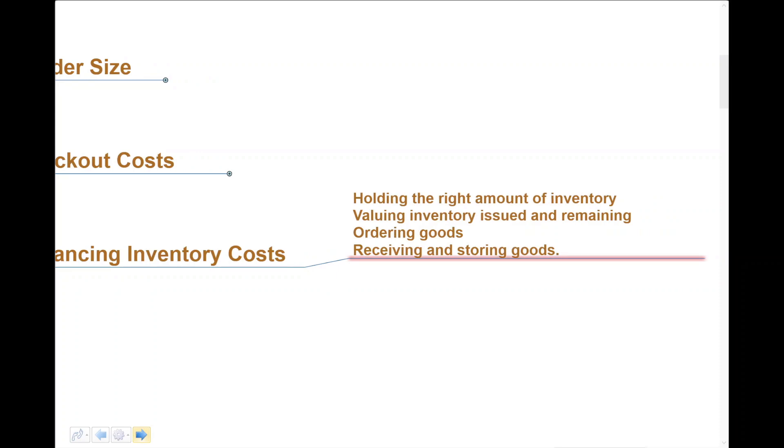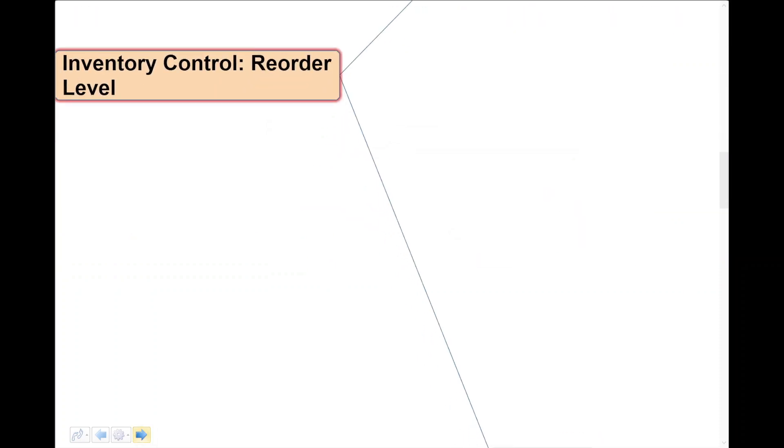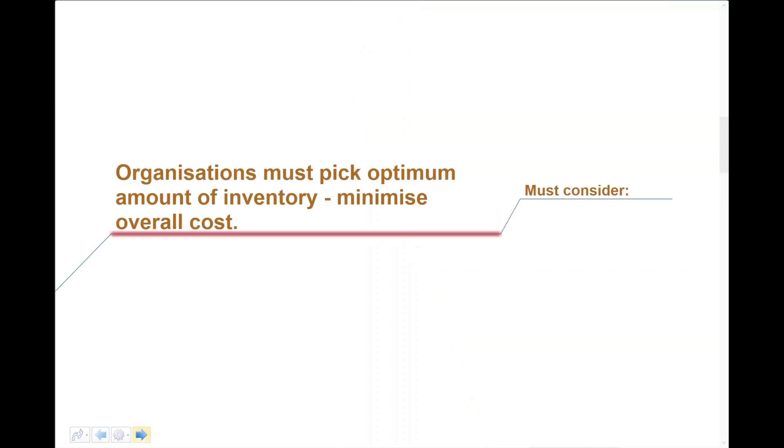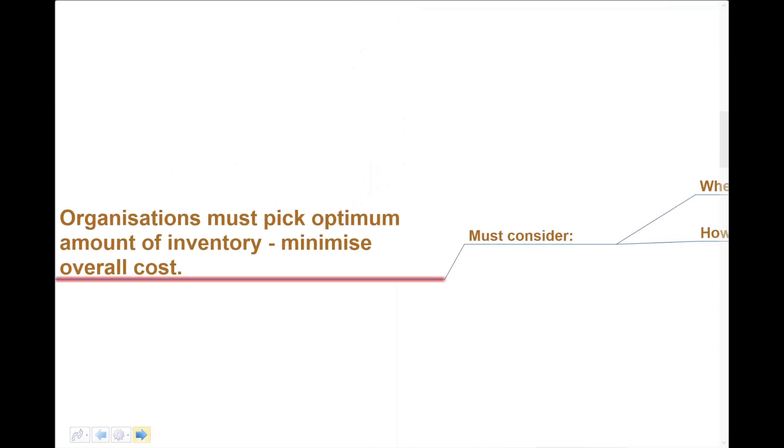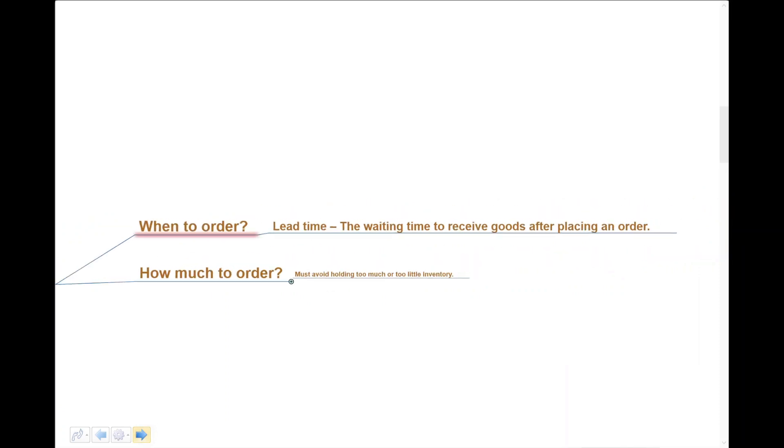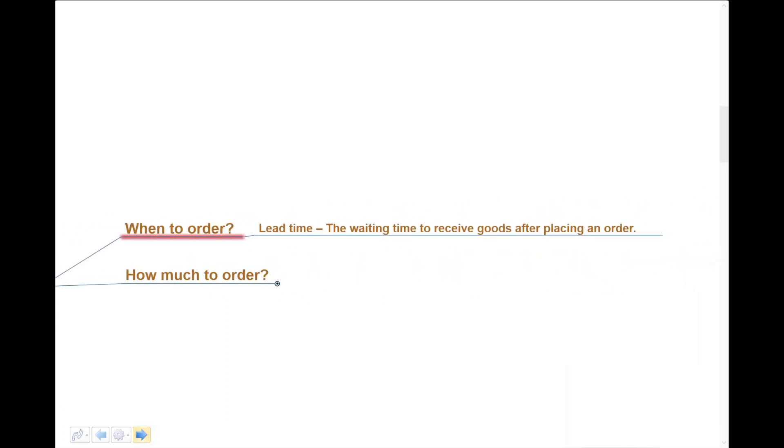When we think about this first area of formulae, let's talk about the reorder level. This is important because the examiner is going to push questions using formulas, and this would be one that he would choose. Organizations must pick the optimum amount of inventory and minimize overall cost. What sort of things do they consider? Clearly, when to order. This phrase 'lead time' is important. Suppliers will be different. We need to know the waiting time between placing an order and actually receiving the goods. That's going to tell us when to order.